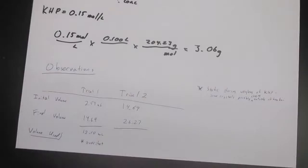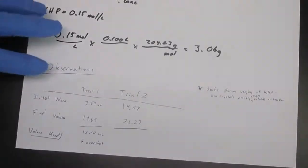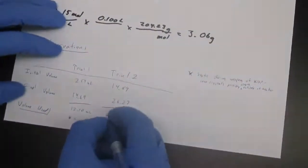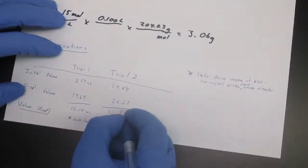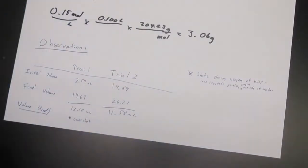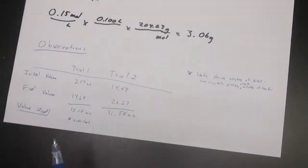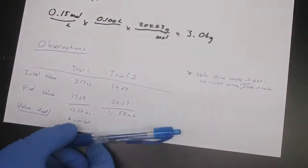And we need to get three trials within 0.1 mils. So let's just calculate what that is. 26.27 minus 14.69, and that is 11.58 milliliters used. Makes sense that we were a bit under our last one because we know that one was overshot. So we're looking for one that is within 0.1 mils of this now for our third trial. And we'll have to do a fourth one. We want three that are within 0.1 mils. So let's try the next one.